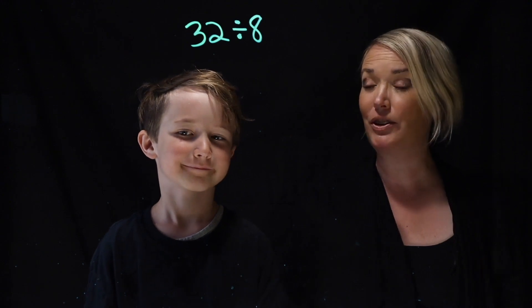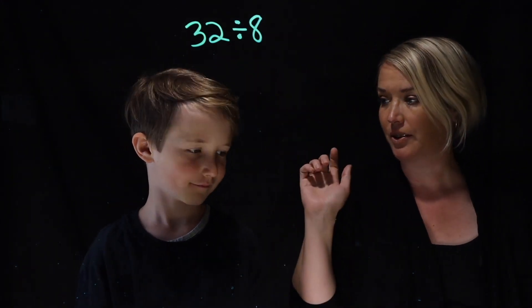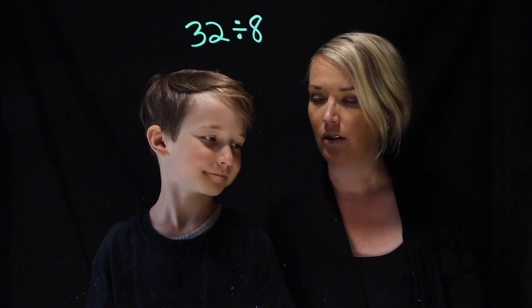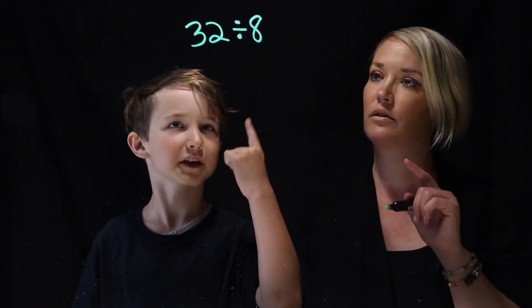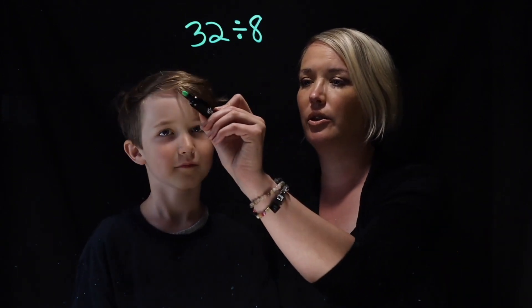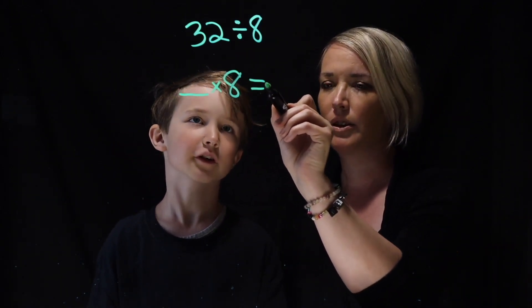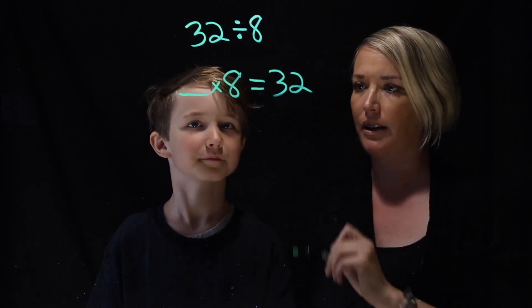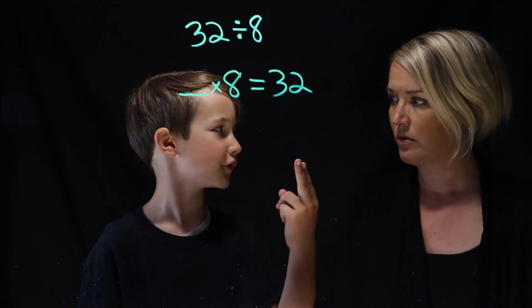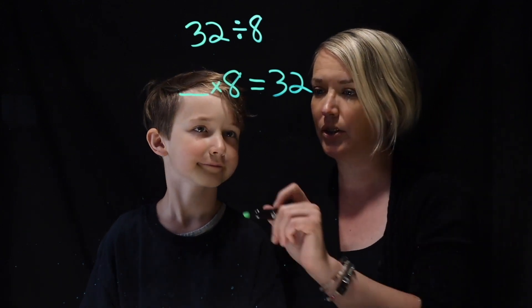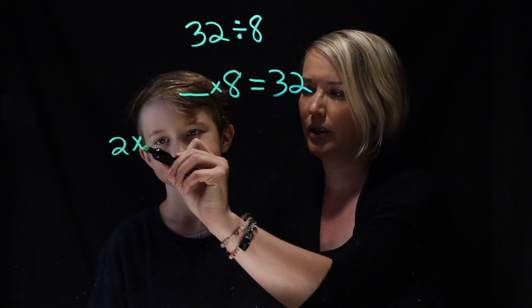Hi fabulous people. Today we're doing 32 divided by 8, and Louie's going to tell us how to solve this question. Okay, what did you do? Well, first I want to see how many times 8 goes into 32. So you want to know how many groups of 8 will give you 32. So first I'm going to try 2 eights — so 2 times 8.